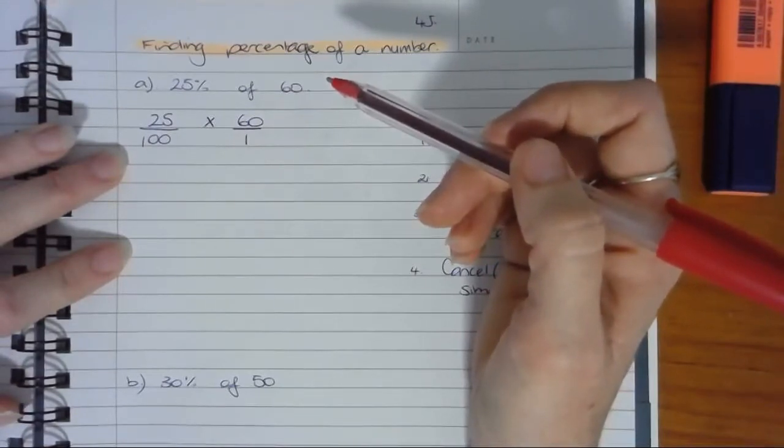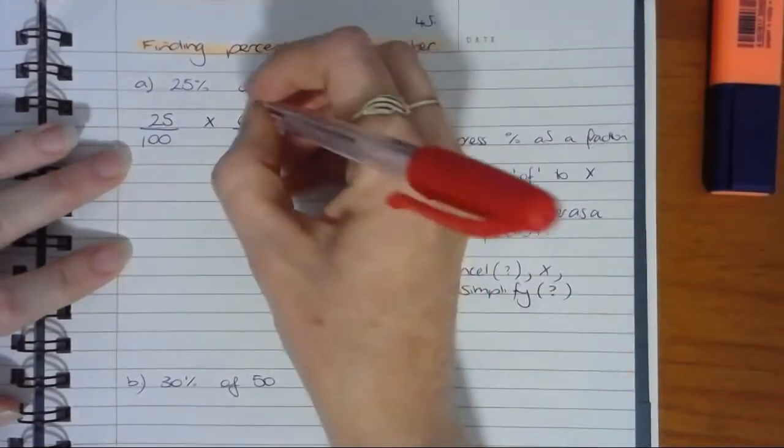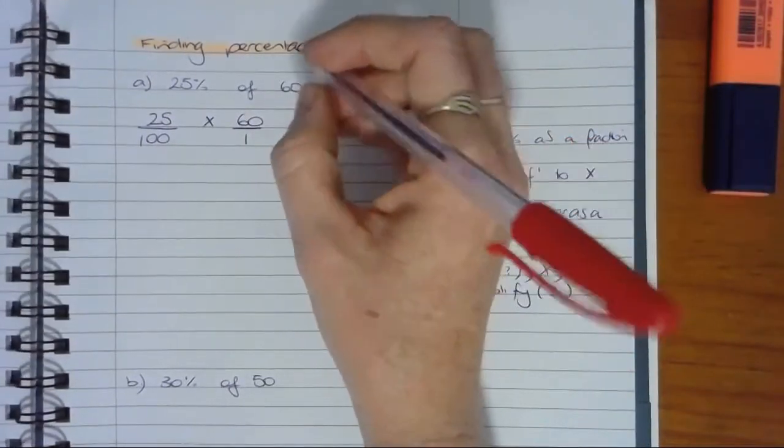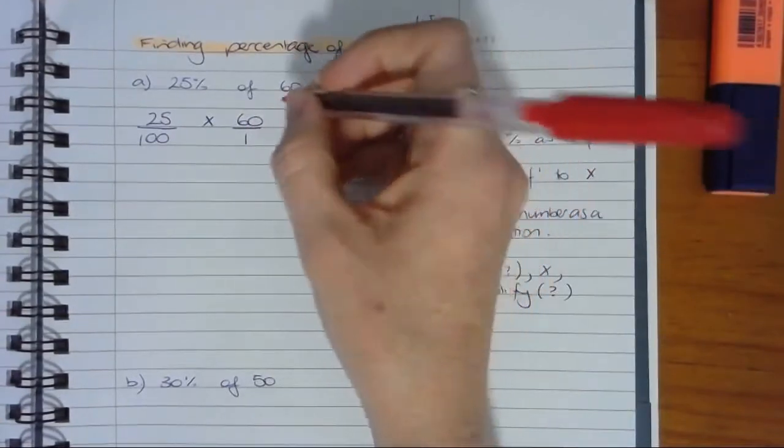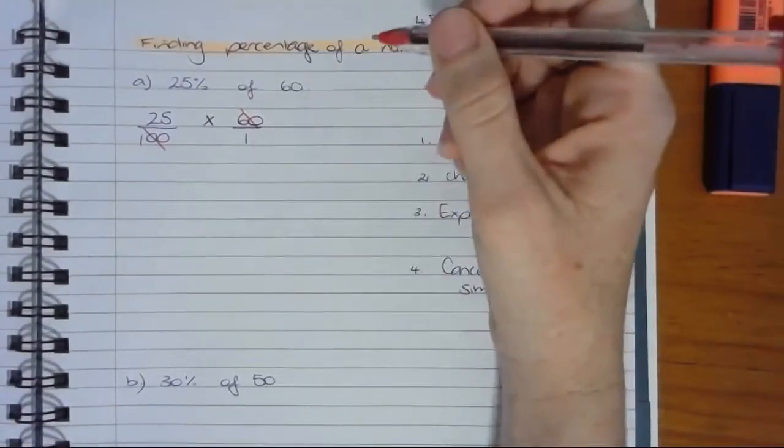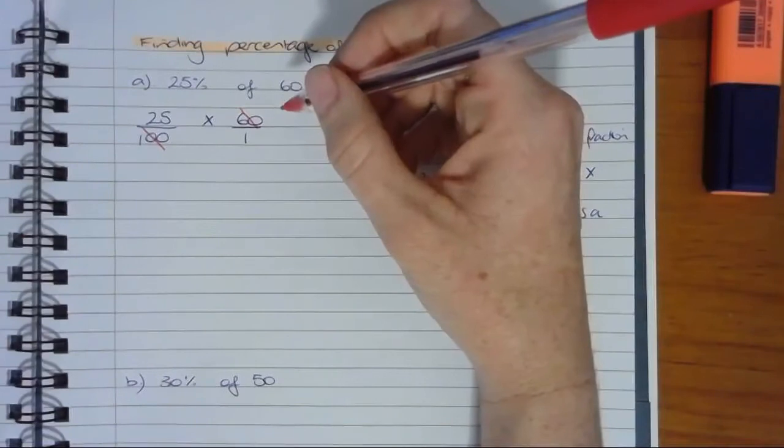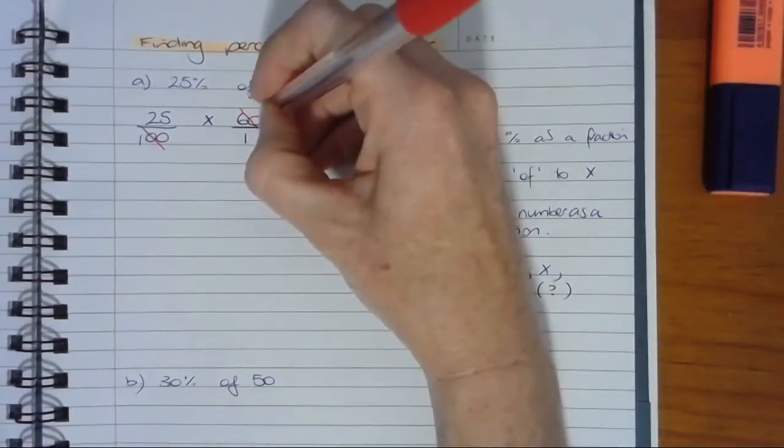and then I'll sort out the smaller numbers later. The idea behind cancelling is to make the numbers smaller to work with. So I'm going to choose 60 and 100. For 60 and 100, the highest number I can think of that divides into both is 20. That will leave me with 3 and 5.